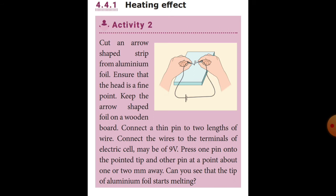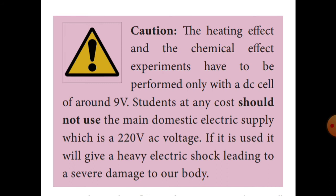Cut an arrow-shaped strip from aluminum foil. Ensure that the head forms a fine pointer. Keep the arrow-shaped foil on a wooden board. Then connect the thin pins of two lengths of wire. Connect the wires to the terminals of an electric cell, which may be of nine volts. Press one pin onto the pointer tip and the other pin about one or two millimeters away. You can see that the tip of the aluminum foil starts melting.